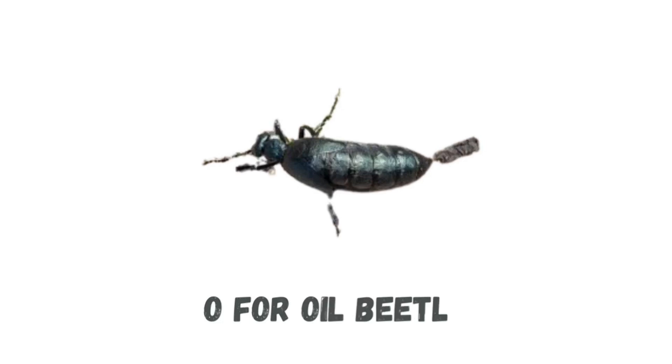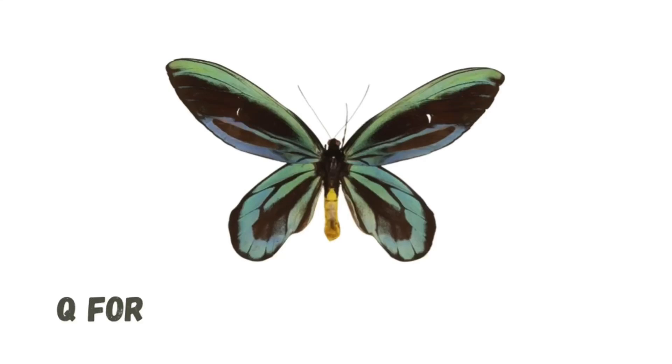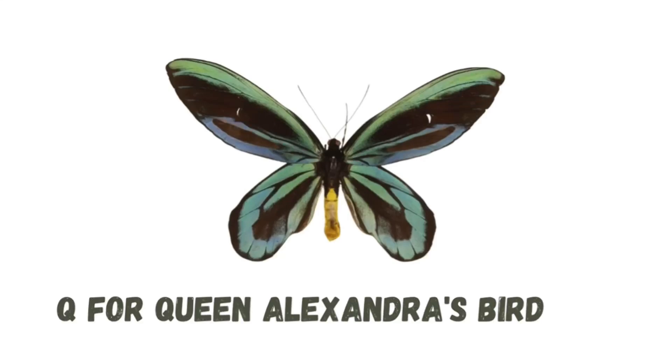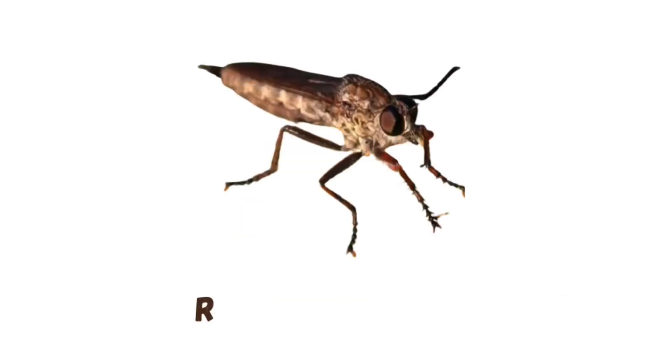O for oil beetle. P for paper wasp. Q for Queen Alexandra's birdwing. R for rover fly.